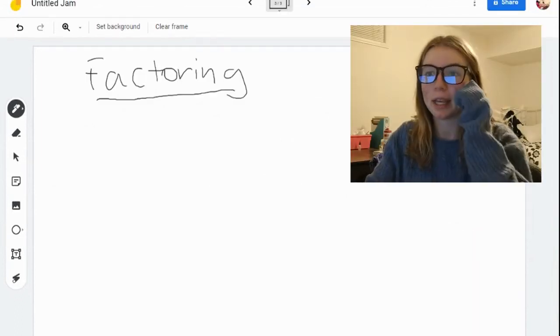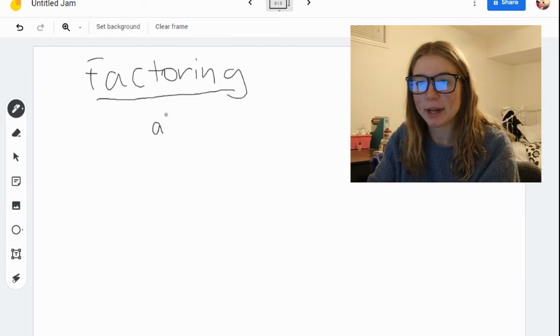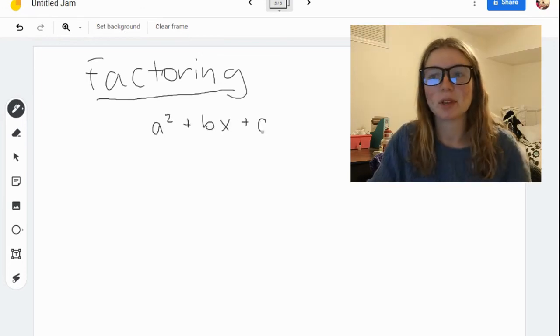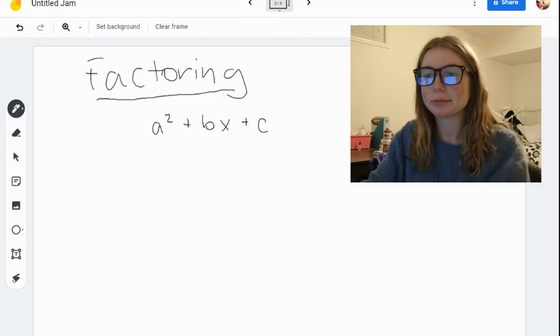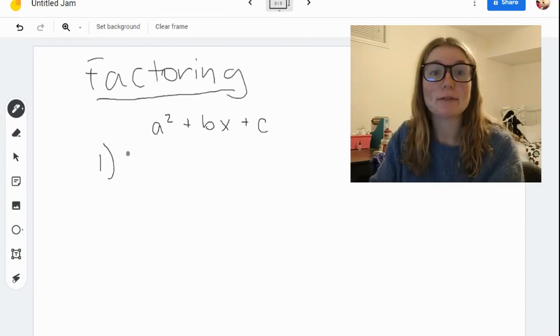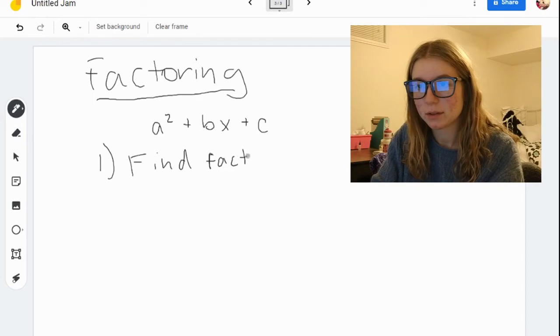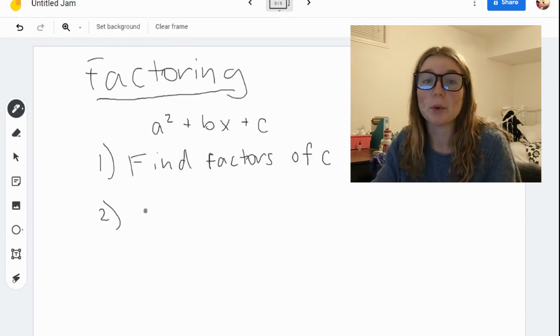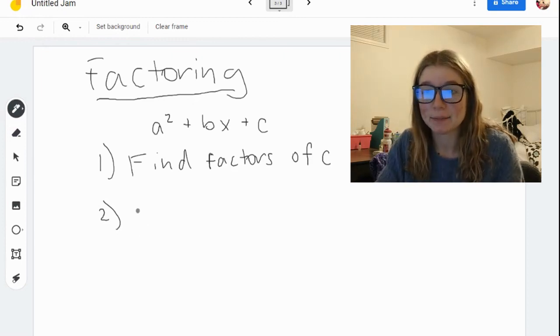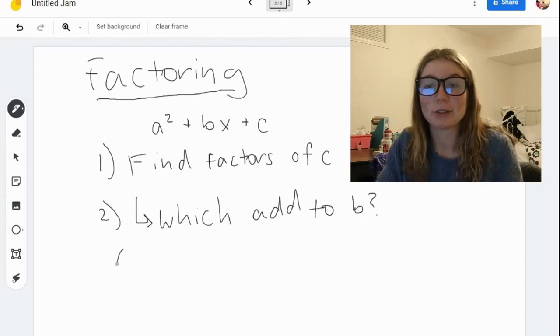So to recap, if you're factoring something like a squared plus bx plus c, where a, b, and c are all constants, they're all numbers. The first step is to find the factors of c. Then next, you want to find which factors of c add to b. And then you've got your factored equation.